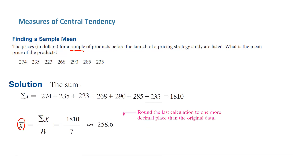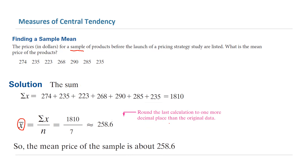Remember that we round the last calculation to one more decimal place than the original data. So basically, we calculated the mean price of the sample, which is about $258.6.